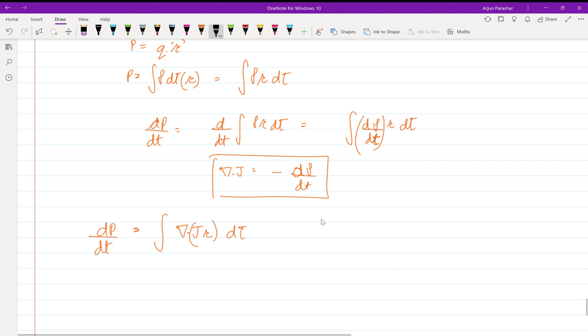Now applying the vector identity that del dot phi into a is equal to del phi dot a plus phi into del dot a.